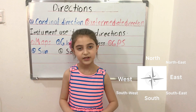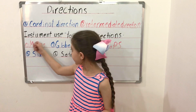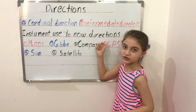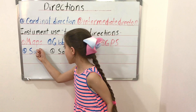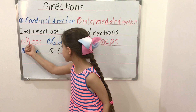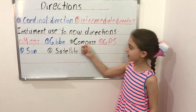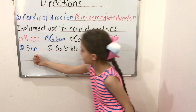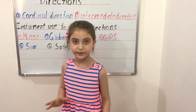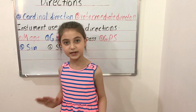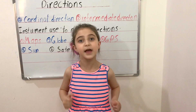Instruments used to know directions: one, maps; two, globe; three, compass; four, GPS; five, sun; six, satellite. There are six instruments that can help us to find our way.